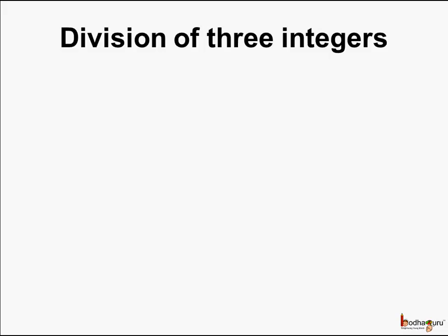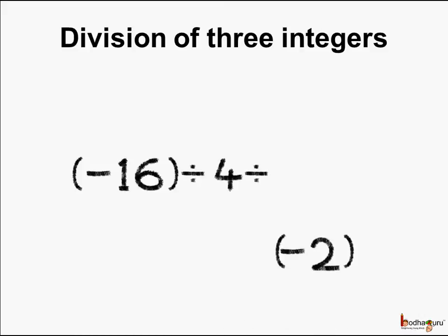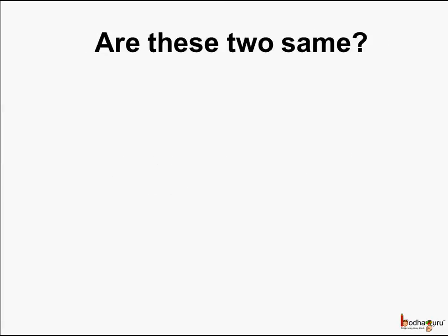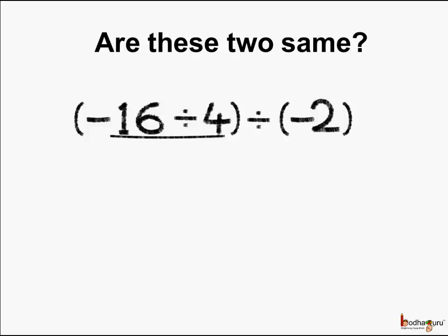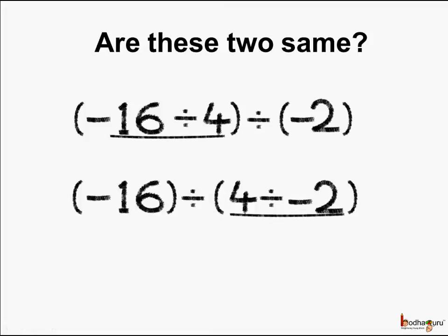Now let's try to divide three integers: minus 16 divided by 4 divided by minus 2. Now are these two the same? If we change the grouping — first taking minus 16 and 4 together, or first taking 4 and minus 2 together — will these two result in the same number? Let us see.